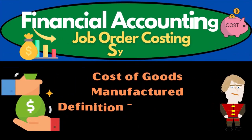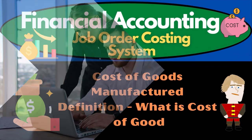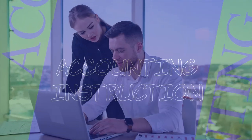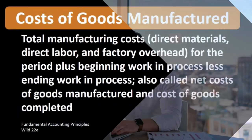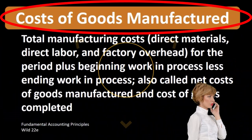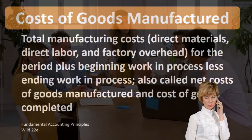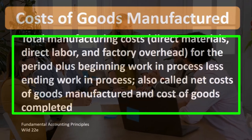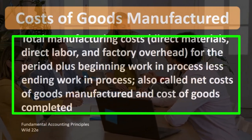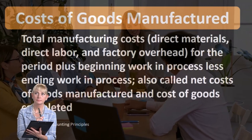Hello. In this lecture we will define cost of goods manufactured. According to Fundamental Accounting Principles, Wild 22nd Edition, the definition of cost of goods manufactured is total manufacturing costs — direct materials, direct labor, and factory overhead for the period — plus beginning work in process, less ending work in process. Also called net cost of goods manufactured and cost of goods completed.